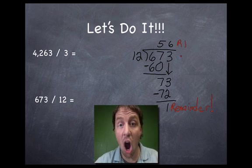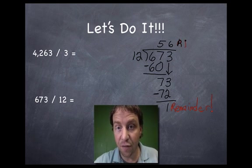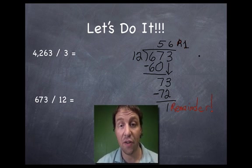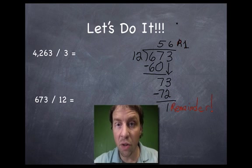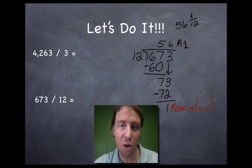And remainders are written with an R. I wrote it in red. I should write it in black so that you can see that you would write it along with the rest of the problem. It's 56 remainder 1. There's one left over. You could also, if you wanted to get crazy smart with this, you could say it was 56 and 1 twelfth. You take that remainder and put it in the numerator, and then you take the number you're dividing by and put it in the denominator. Cool, huh?